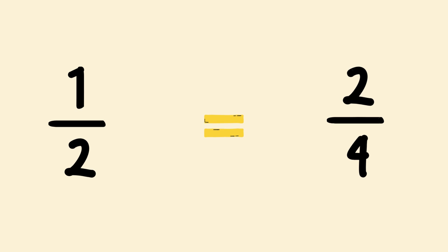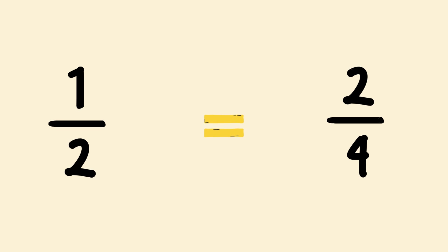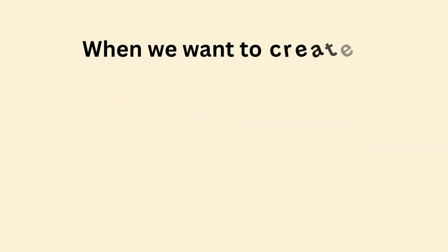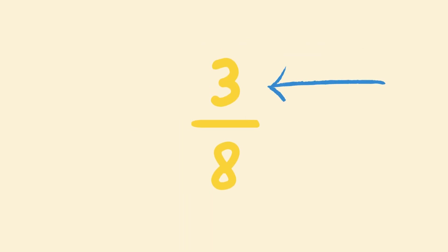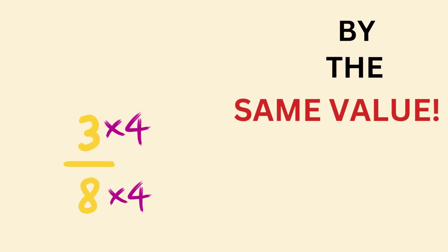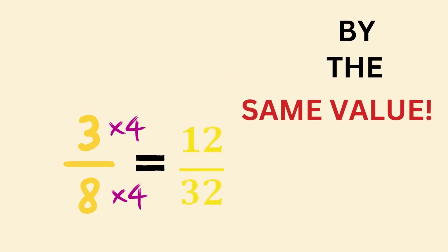Notice that to turn one-half into two-quarters, we can multiply the numerator and denominator of the fraction one-half by two. So, procedurally, when we want to create an equivalent fraction, we must multiply both the numerator, the top number, and the denominator, the bottom number, by the same value. This keeps the value of the new fraction the same.